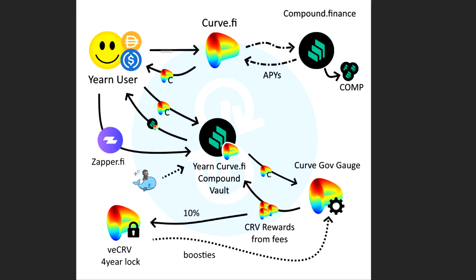Now, this little monkey on the wheel here — this is another vault that's out right now, kind of like an experimental vault. I made a video on it; you can see the video up in the top right-hand corner. It's called the Backscratcher. And this Backscratcher is going to also boost these rewards for this vault, as it boosts rewards for all the Curve vaults. Watch the video if you want to know what that vault is doing.